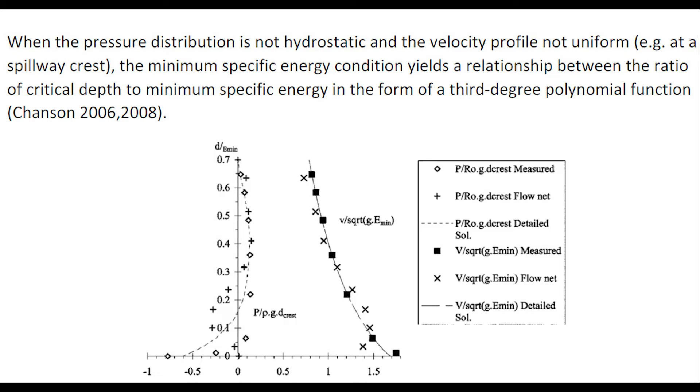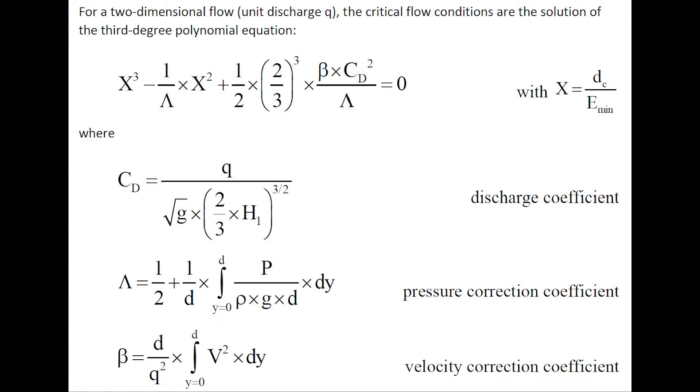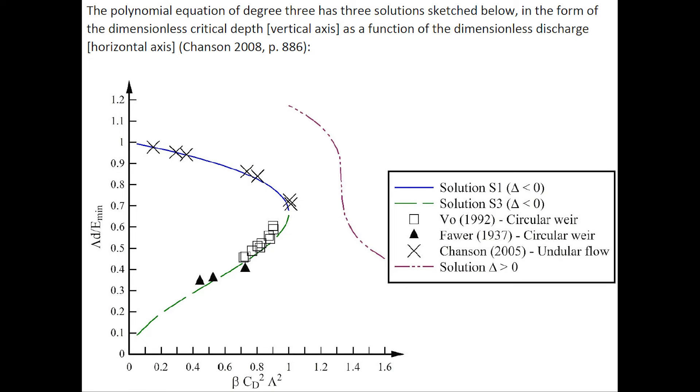The minimum specific energy conditions yield a relationship between the ratio of critical depth to minimum specific energy in the form of a third-degree polynomial function. For a two-dimensional flow with a unit discharge q, the critical flow depth is the solution of this third-degree polynomial expression, in which Cd is a dimensional discharge coefficient, lambda is a pressure correction coefficient, and beta is a velocity correction coefficient.